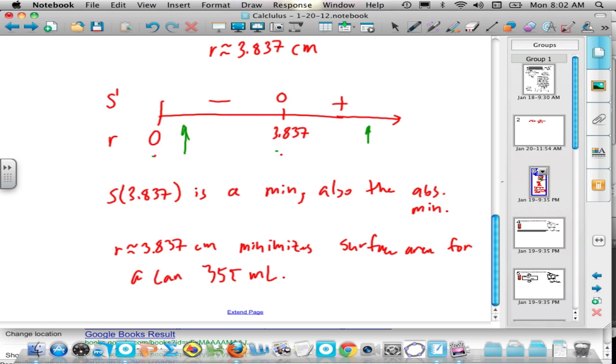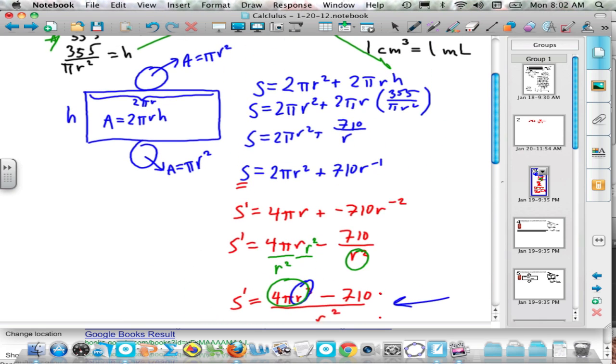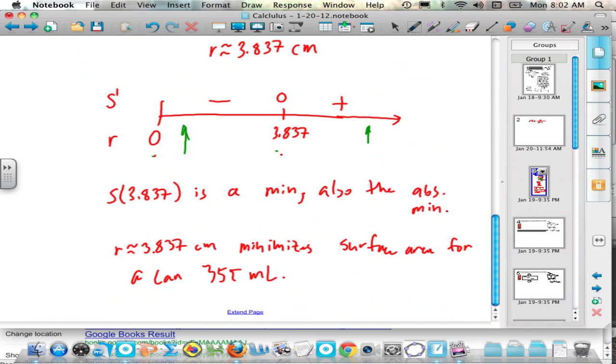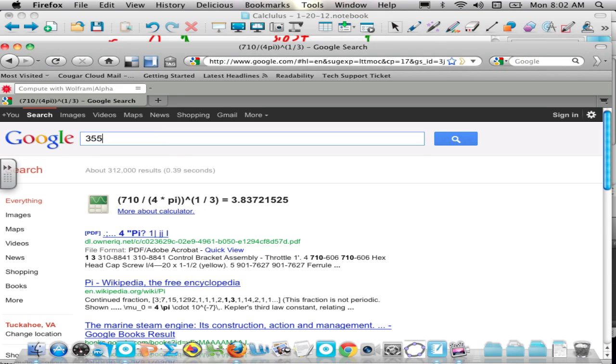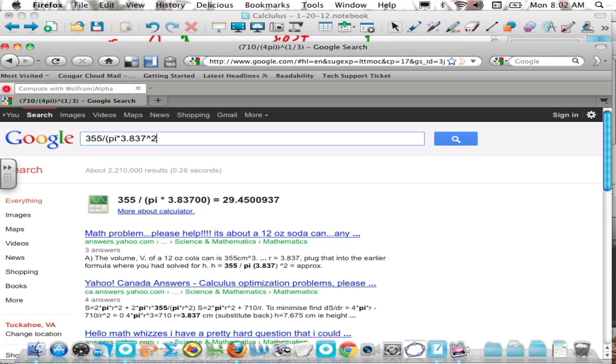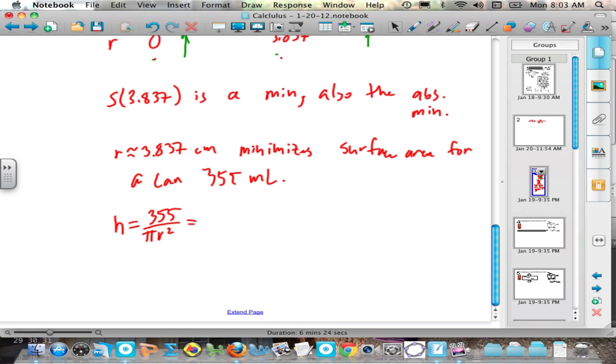Okay. Now, you might want to ask yourself, well, what's the height going to be? So if you think about that, well, the height is a function we had way back up here. One of the first things we did was we calculated height to be 355 over pi r squared. So if I take 355 over pi r squared, work that through. H is 355 over pi r squared. And I know r is this 3.87 business. 837, excuse me. Divided by pi divided by r. I'll put this in parentheses. Pi times, paste that in to the second. And we'll get something like this. 7.675 for the height. 7.675 for the height. 7.675, and that's centimeters.